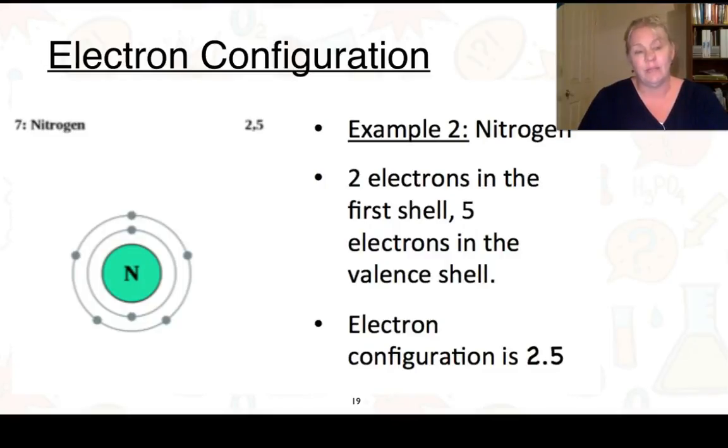Here's our second example. So now we're looking at nitrogen. Nitrogen has 7 electrons. In the first shell, we could only fit 2. So the next 5 have to fit into the second shell, and so we have an electron configuration of 2, 5.